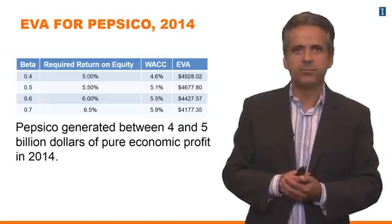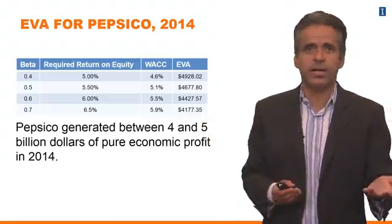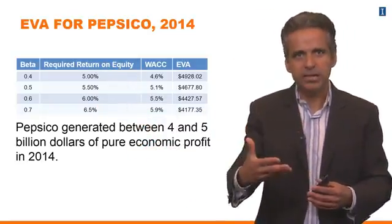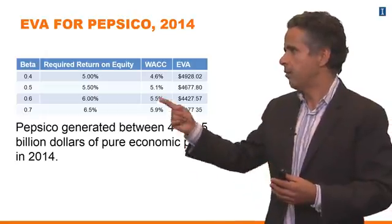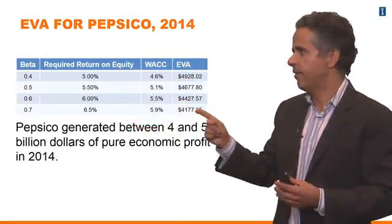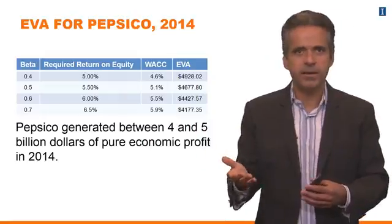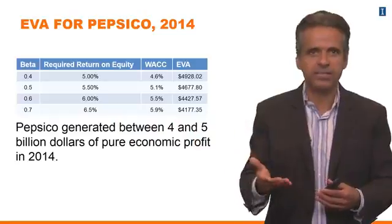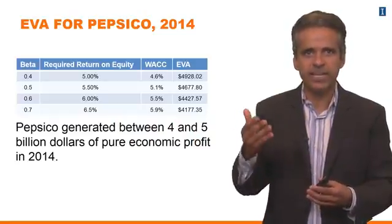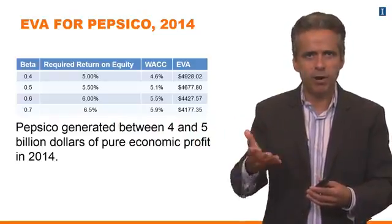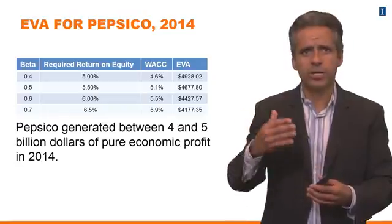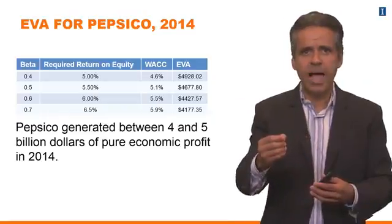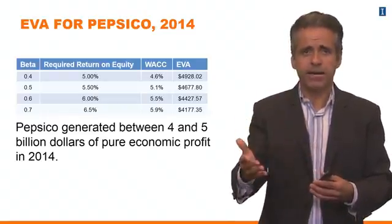Given this analysis, we can compute the EVA, which is reported in this table. For each beta, we have a certain required return on equity, a WACC, and that gives you the EVA. So even if you take the most conservative estimate — a WACC of 6% — we find that PepsiCo was generating approximately $4 billion of pure economic profit in 2014. That's the difference between OPAT and the WACC multiplied by the operating assets.